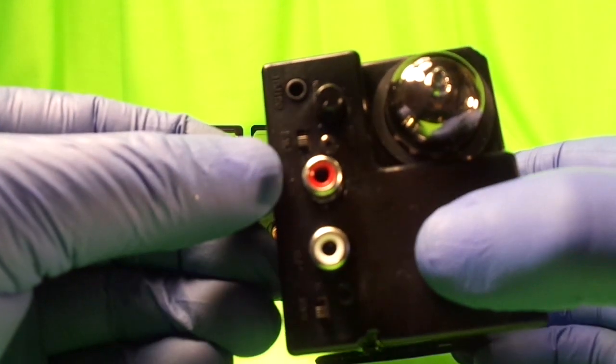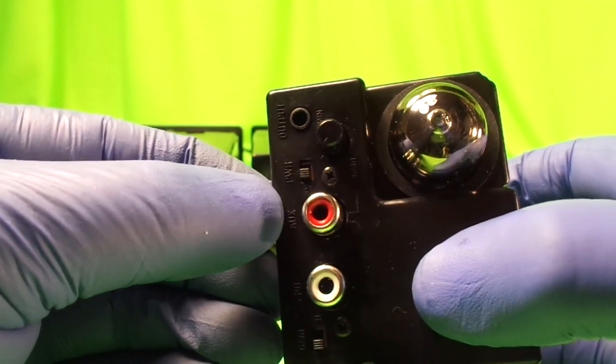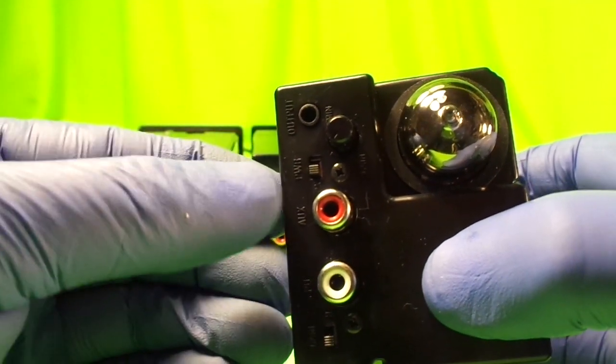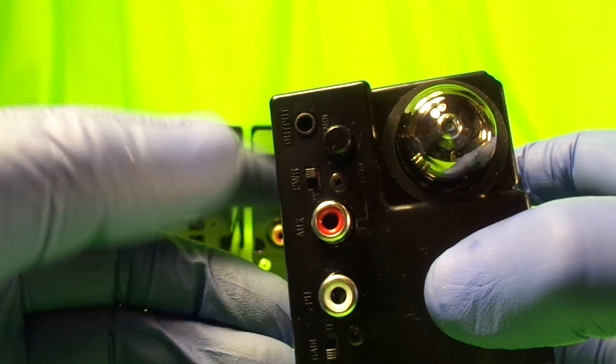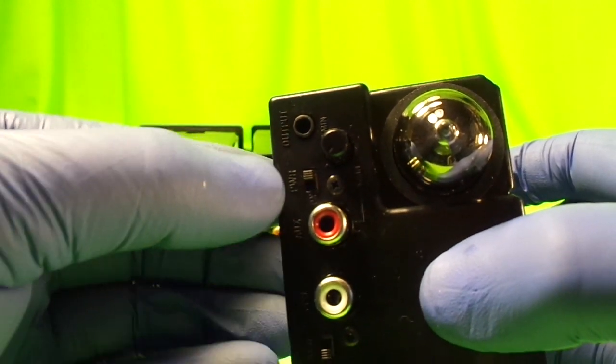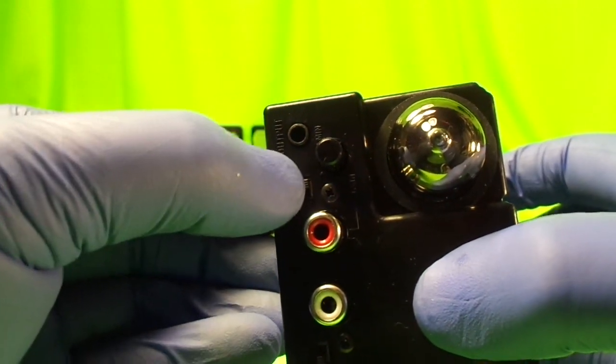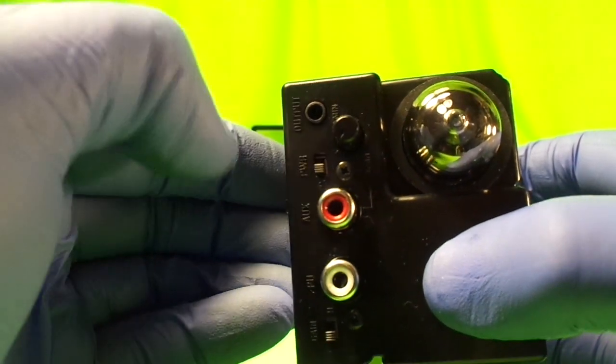The power switch operates like the CTP1. If you activate it by moving it upwards, the preamp will stay on all the time. So you don't want to do that unless you're using the phantom power.